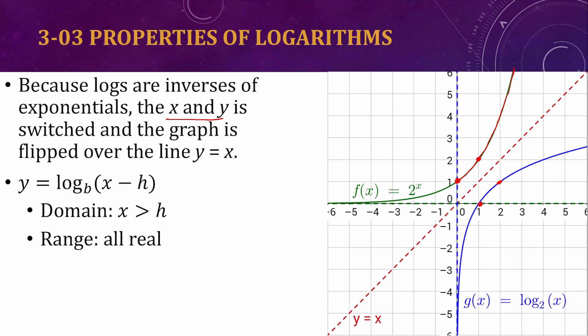The range is all real numbers. That was the domain of the exponential. The exponential had a horizontal asymptote of y equals 0. The logarithm has a vertical asymptote of x equals 0. Or if we're shifted, x equals h.